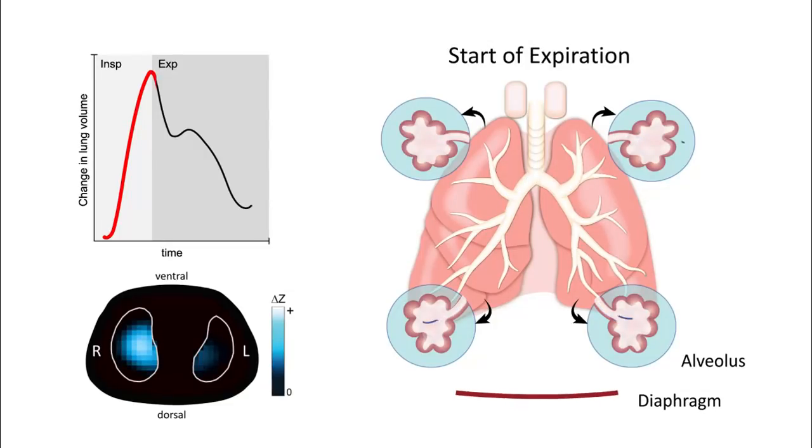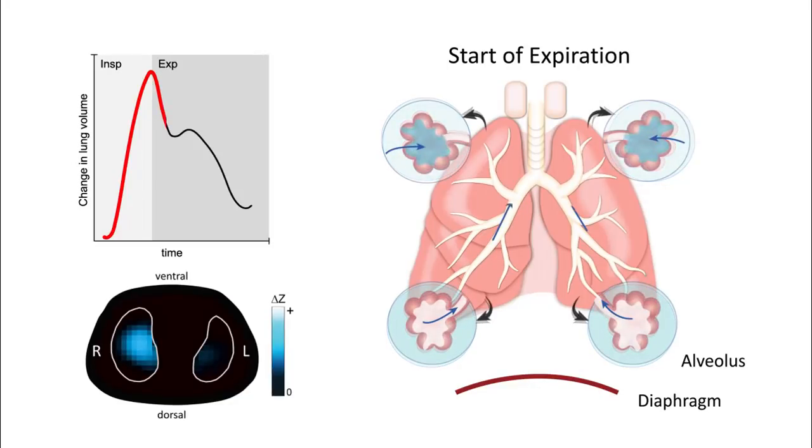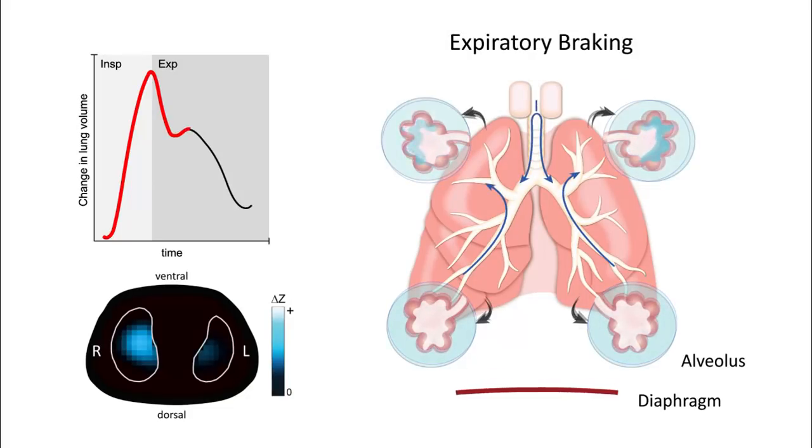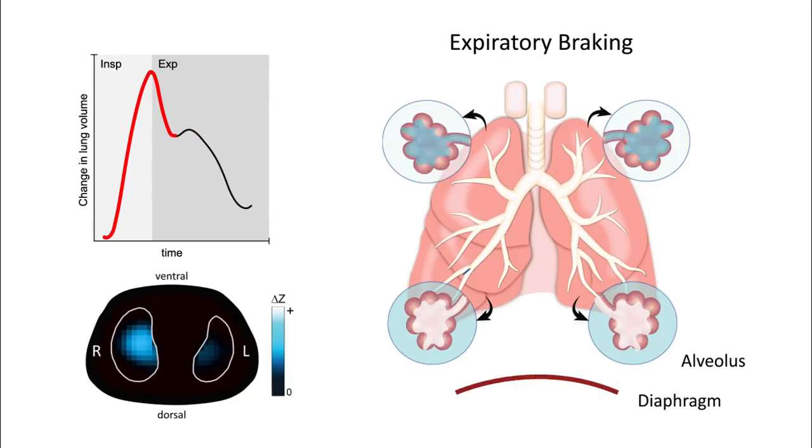During expiration, the intrathoracic pressure gradient falls and the alveoli are at risk of being flooded with fluid again. Our imaging suggests that neonates prevent this by slowing the contraction of the diaphragm and partially closing the glottis, both of which slow the escape of the gas from the lungs and keep intrathoracic pressure high.